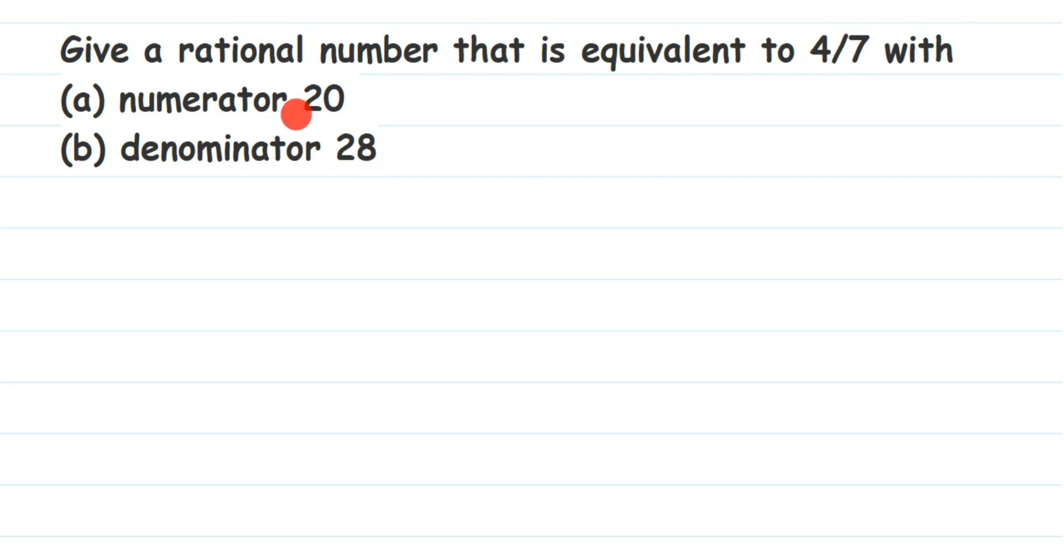So let's do this. The first one, they want the numerator to be 20, right? Now the number here is 4/7. How to find out the equivalent rational number? There are two ways: you can multiply and you can divide. Here 20 is greater than 4, they want numerator to be 20, so the 4 has to be turned into 20.